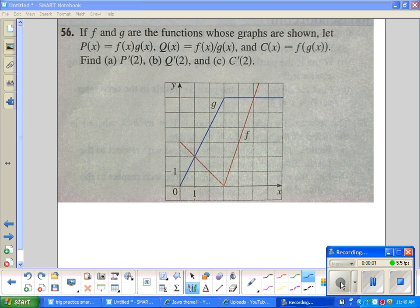This is problem 56 in chapter 3 review. It says f and g are the functions whose graphs are shown. Let P(x) equal f(x) times g(x). Let Q(x) equal f(x) divided by g(x). And let C(x) be f of g of x.